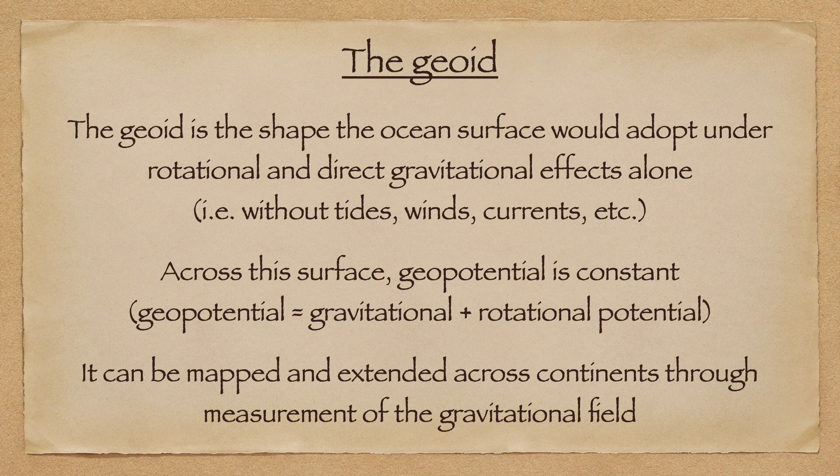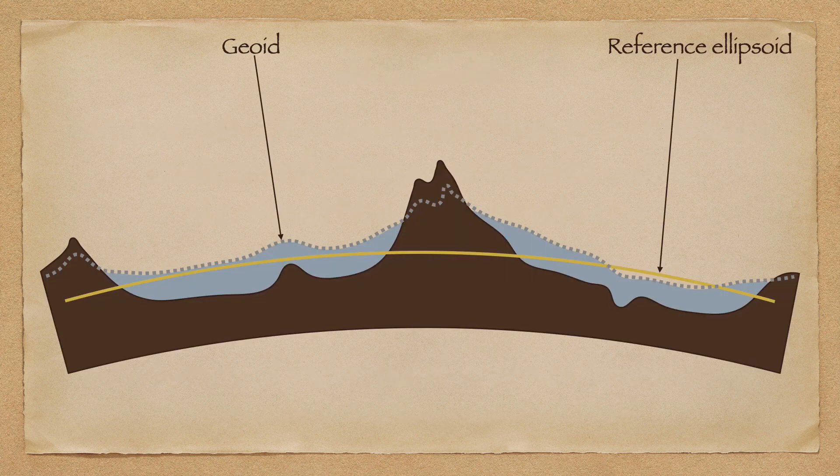The geoid is the equipotential surface that coincides with mean ocean surface height. This is the shape that the ocean surface would adopt if it was subject only to gravitational and rotational effects — in other words, excluding tidal effects, currents, and winds. I've already omitted some of the more technical details because some rotational effects are tides, but we'll skip over that.